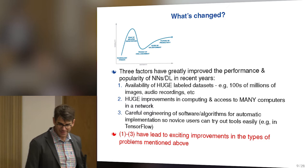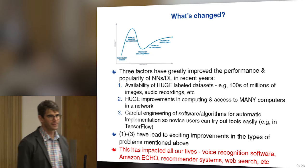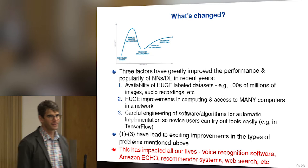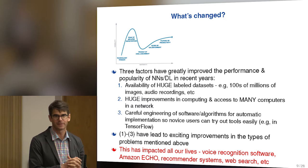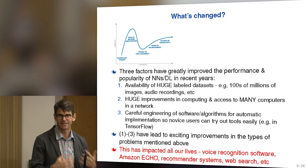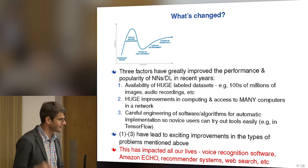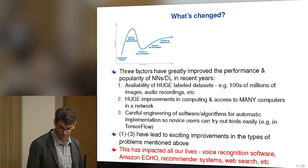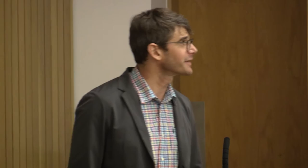Certainly these three factors have led to exciting improvements and really impacted all our lives. My son and wife use the Amazon Echo all the time — you can ask it questions like what's the weather, tell you jokes, it almost seems like it has sort of a personality. You can tell it to set the alarm, have it control various things in your house. Recommender systems, web search, voice recognition software — we all use these things constantly now.